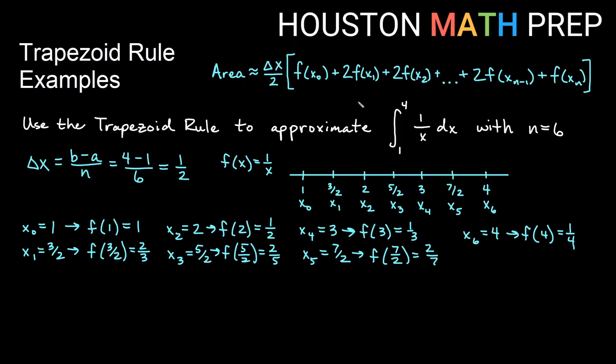I can plug those in. And I'm going to actually rewrite my trapezoid rule formula here in terms of n equals 6. So we'll go ahead and say that we're going to approximate the area by using delta x over 2 times... Now remember, the first and last y value, we only have one of those, and then we will have 2 of every other y value.